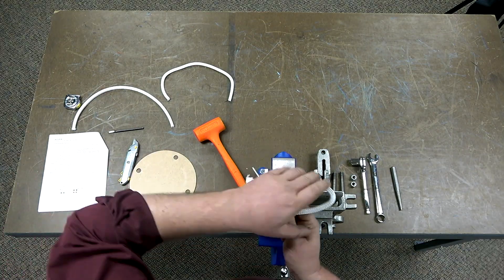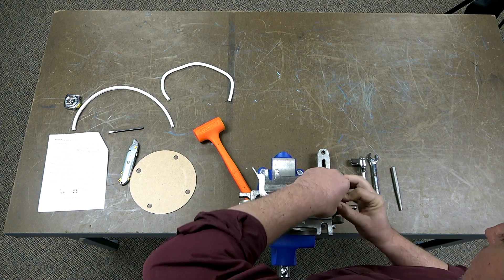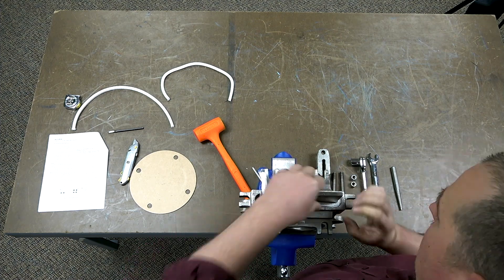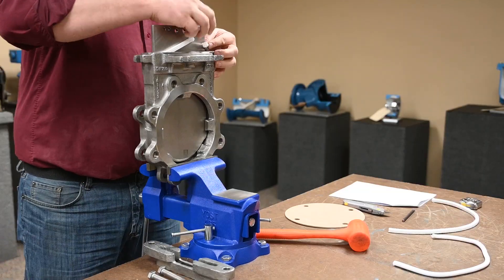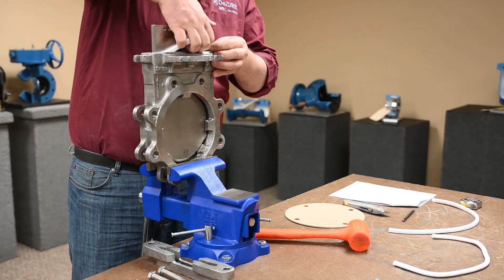Insert the packing into the packing chamber around the gate, starting on the long side of the packing chamber. Make sure the length is accurate and the ends meet with no gap or overlap.